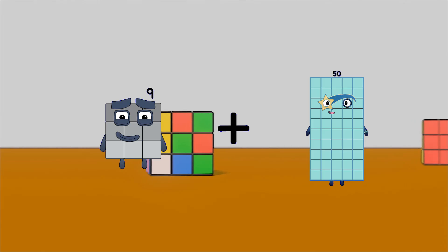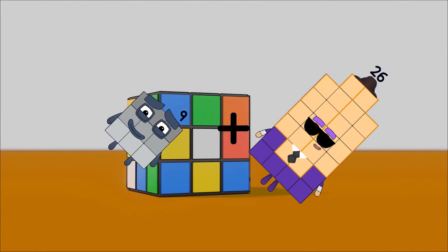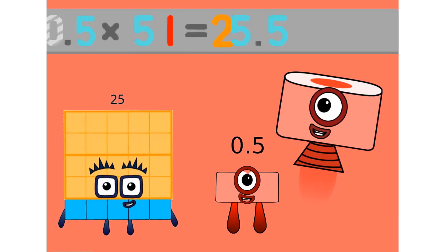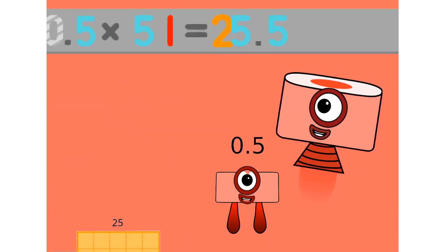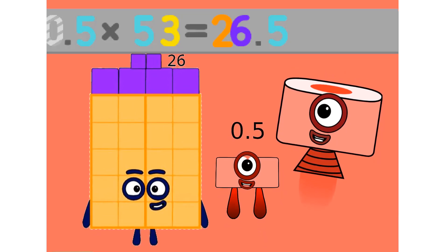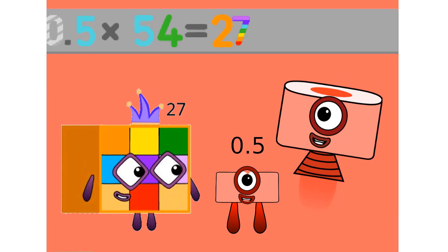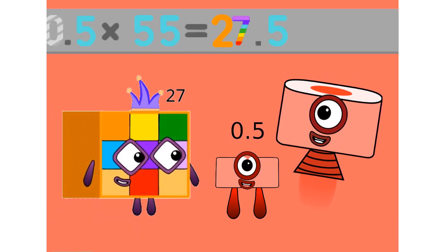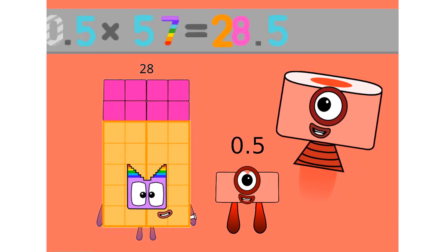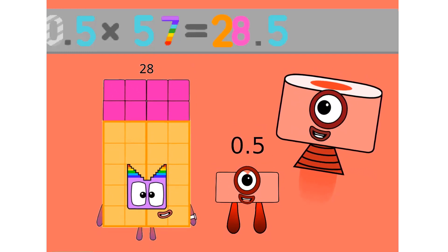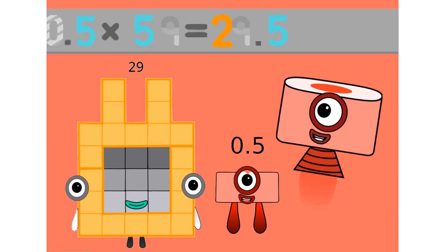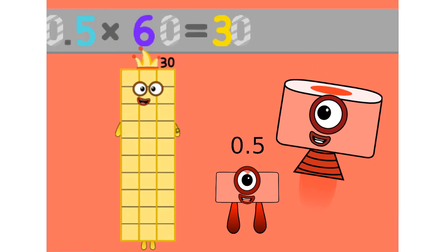9 plus 26 equals 35. 0.5 times 50 equals 25. 0.5 times 51 equals 25.5. 0.5 times 52 equals 26. 0.5 times 53 equals 26.5. 0.5 times 54 equals 27. 0.5 times 55 equals 27.5. 0.5 times 56 equals 28. 0.5 times 57 equals 28.5. 0.5 times 58 equals 29. 0.5 times 59 equals 29.5. 0.5 times 60 equals 30.